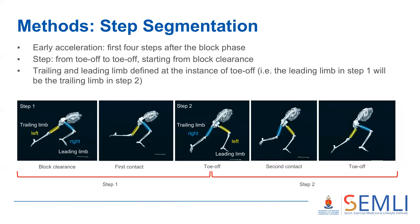The instances of touchdown and toe-off were determined from the video for the first four steps after the block phase. The sagittal plane thigh orientation angle was normalized to 101 data points from toe-off to toe-off of each step. The trailing and leading limb was designated at the start of each step — illustrated for the first two steps where the right leg was designated as the leading limb in step one and became the trailing limb in step two.